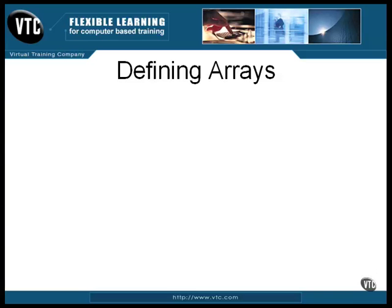An array has two properties that allow for efficient access. It is contiguous in memory — that is, there are no gaps. Each member of the array is flush up against the next member. Also, it is uniform — every member is exactly the same size.